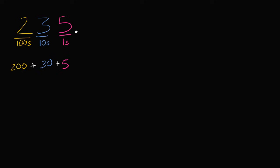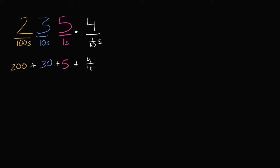So what am I talking about? Right to the right of the decimal point, this is going to be the tenths place. Whatever number I write here tells us how many tenths we're dealing with. So if I were to write the number four right over here, now my number is two hundreds plus three tens plus five ones plus four tenths. You could view this as four times one tenth, or you could write this as four tenths — not tens, four tenths.